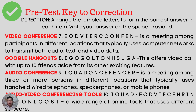5: A program used to locate different websites is called an internet browser. 6: A major device used by an online user to communicate with another online user is called a personal computer. 7: A meeting among participants in different locations that typically uses computer networks to transmit audio, text, and video data is called a video conference. 8: This offers video calls with up to 10 friends aside from its other exciting features — Google Hangouts. 9: A meeting among three or more persons in different locations using handheld wired telephones, speaker phones, or mobile phones is called an audio conference. 10: A wide range of online tools that uses different software is called audio-video conferencing tools.